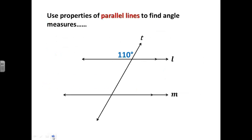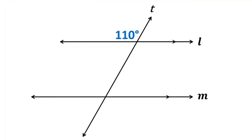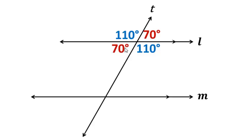Now let's apply what we've learned — using properties of parallel lines to find angle measures. Let's say this angle is 110. From previous chapters, we know vertical angles are congruent. We also have a linear pair here, and a linear pair is supplementary, so 180 minus 110 equals 70. Then vertical angles are congruent again to fill in the remaining angles.